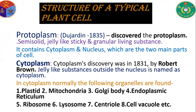Now, protoplasm. It is a semi-solid, jelly-like, sticky and granular living substance. It contains cytoplasm and the nucleus. These are the two main parts of the cell. Cytoplasm was discovered in 1831 by Robert Brown. The jelly-like substance outside the nucleus is named cytoplasm.